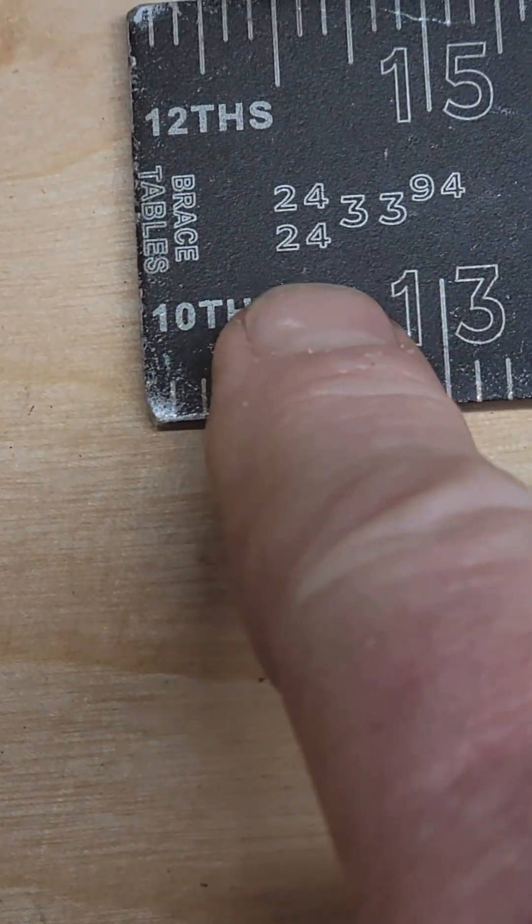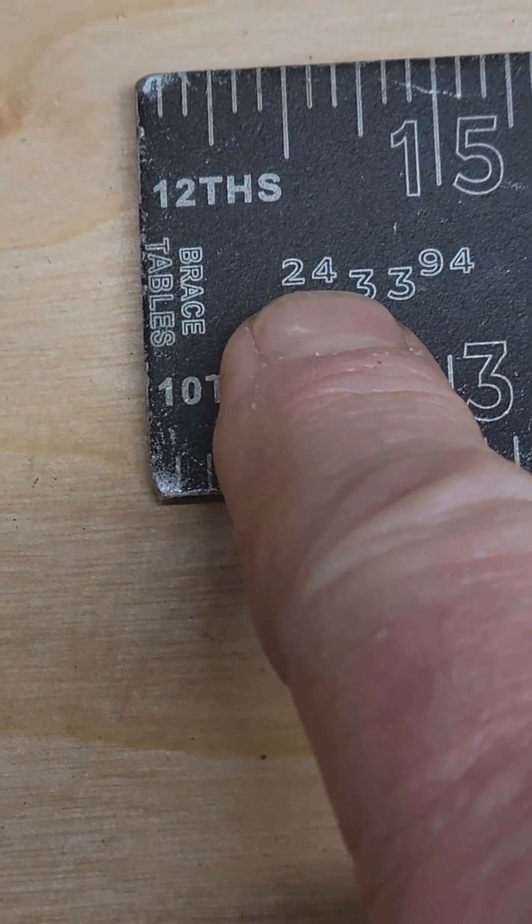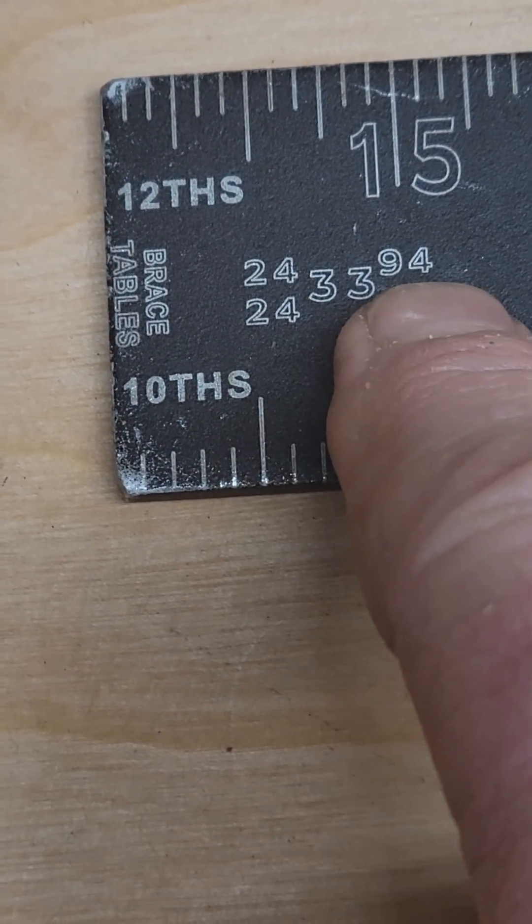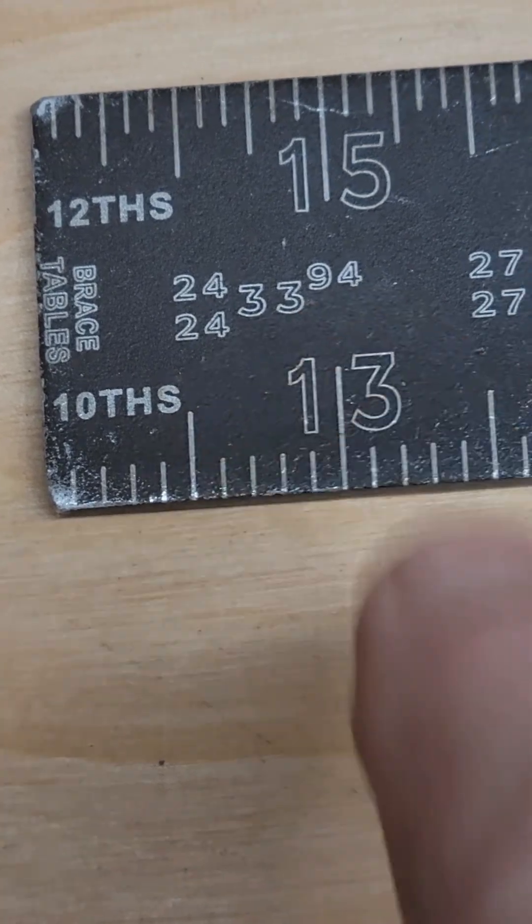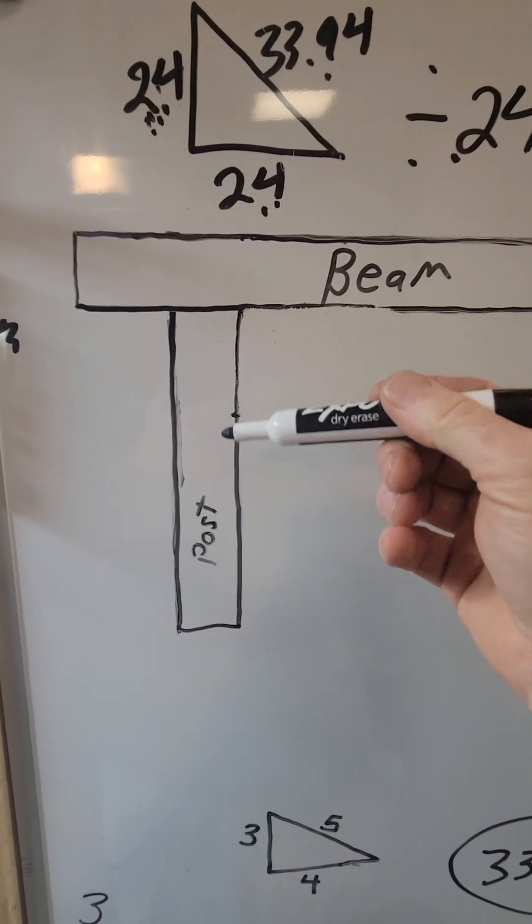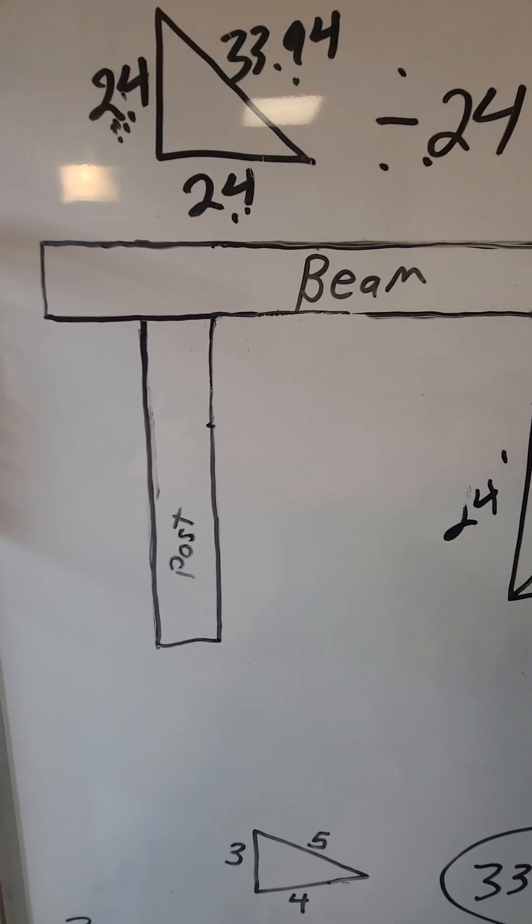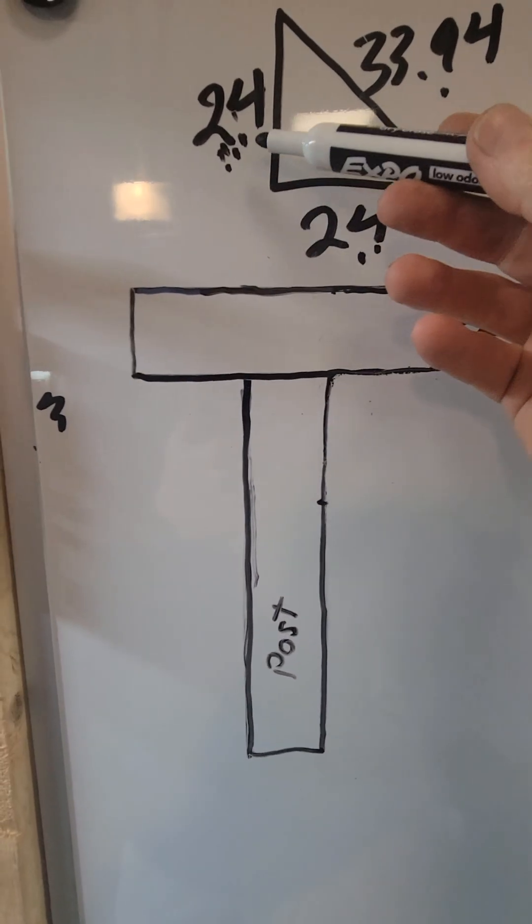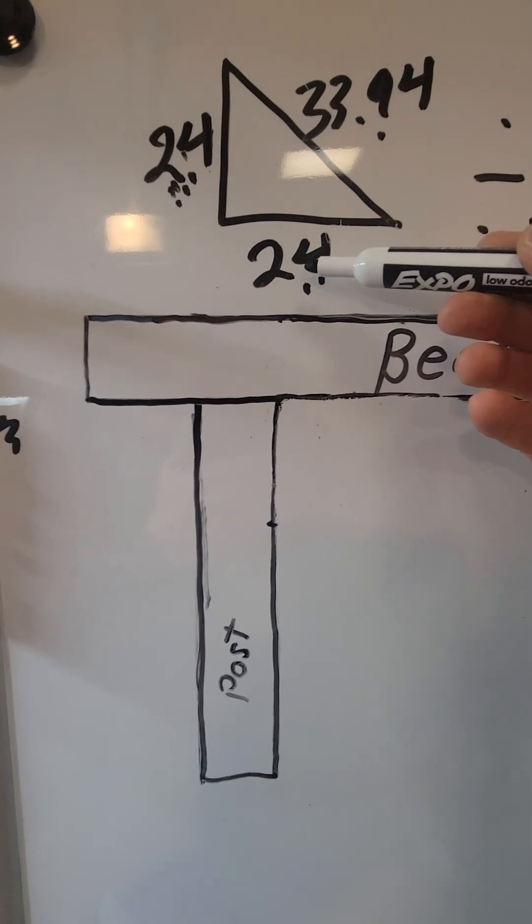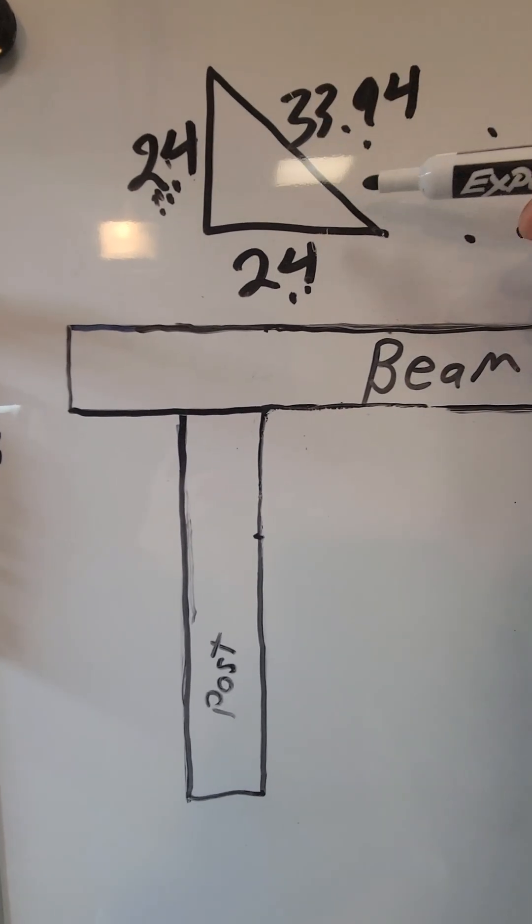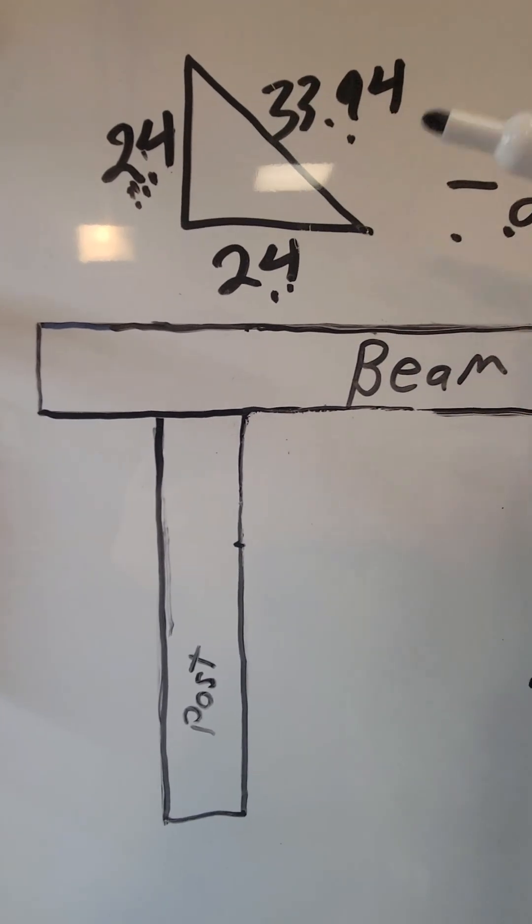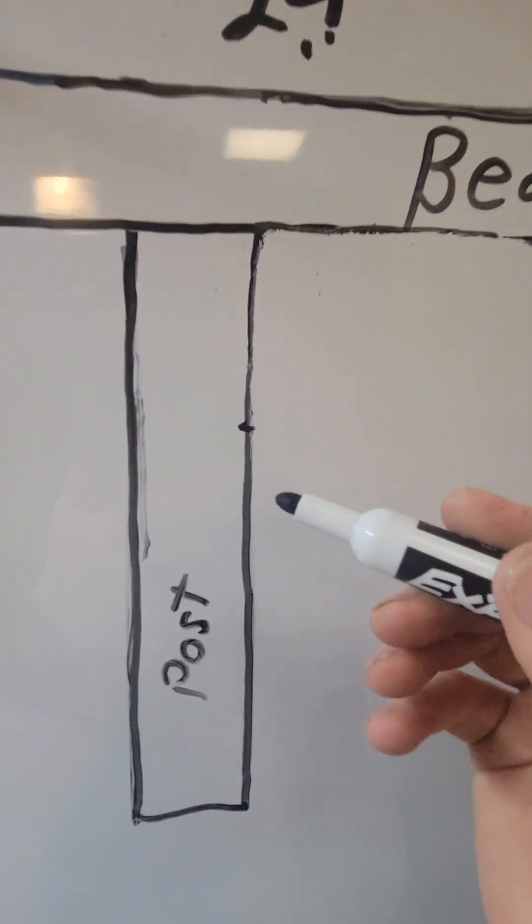So let's just start off with the first one. We've got 24 and 24 and 33 and 94 one-hundredths of an inch. So if you have a post or column here and a beam across your top right here, we've got 24 and 24 right here and we got 33 and 94 one-hundredths of an inch on a hypotenuse or your diagonal.